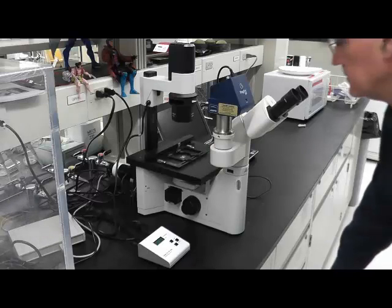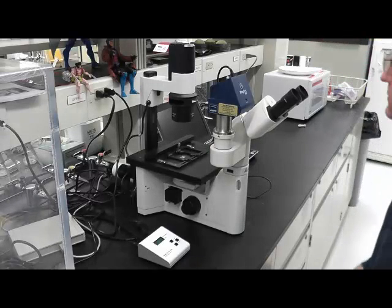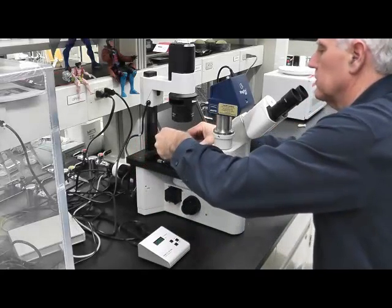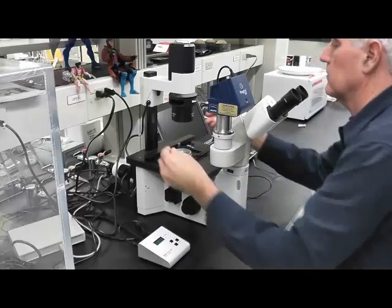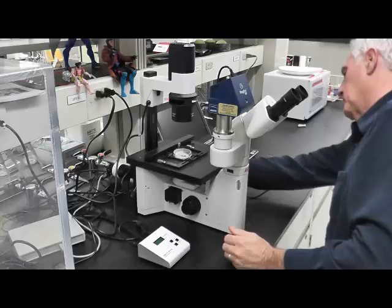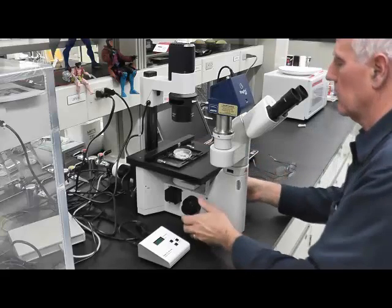When you first sit down at the epifluorescent microscope, you'll want to operate the microscope under bright field conditions to locate a cell. Place the dish onto the stage and be sure it's tightly affixed. Adjust the binocs for your own eyes and turn on the bright field.